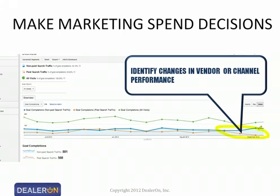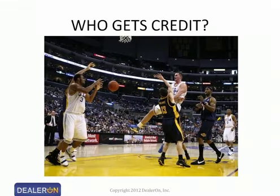As an example, Chris points to a dealer who stopped doing paid search at the end of a particular month — visible as a sharp change in the goal value graph. If you see a change you don't understand, it's a perfect opportunity to go back to your vendor and ask why something went up or down, or to discuss reallocating marketing spend from one channel to another based on where results are better.